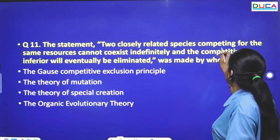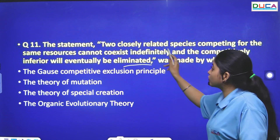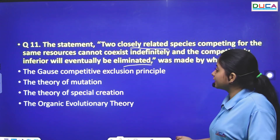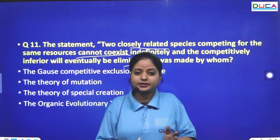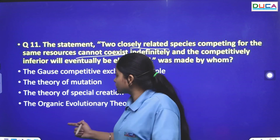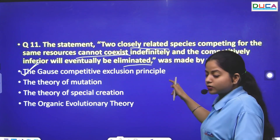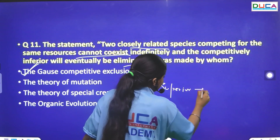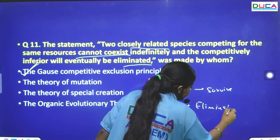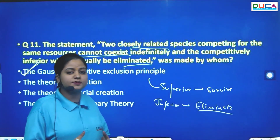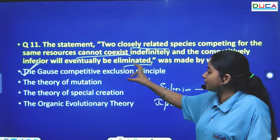The next question: Two closely related species competing for the same resources cannot coexist indefinitely, and the competitively inferior will eventually be eliminated. The superior one survives and the inferior one is eliminated. This statement represents the Gause's Competitive Exclusion Principle.